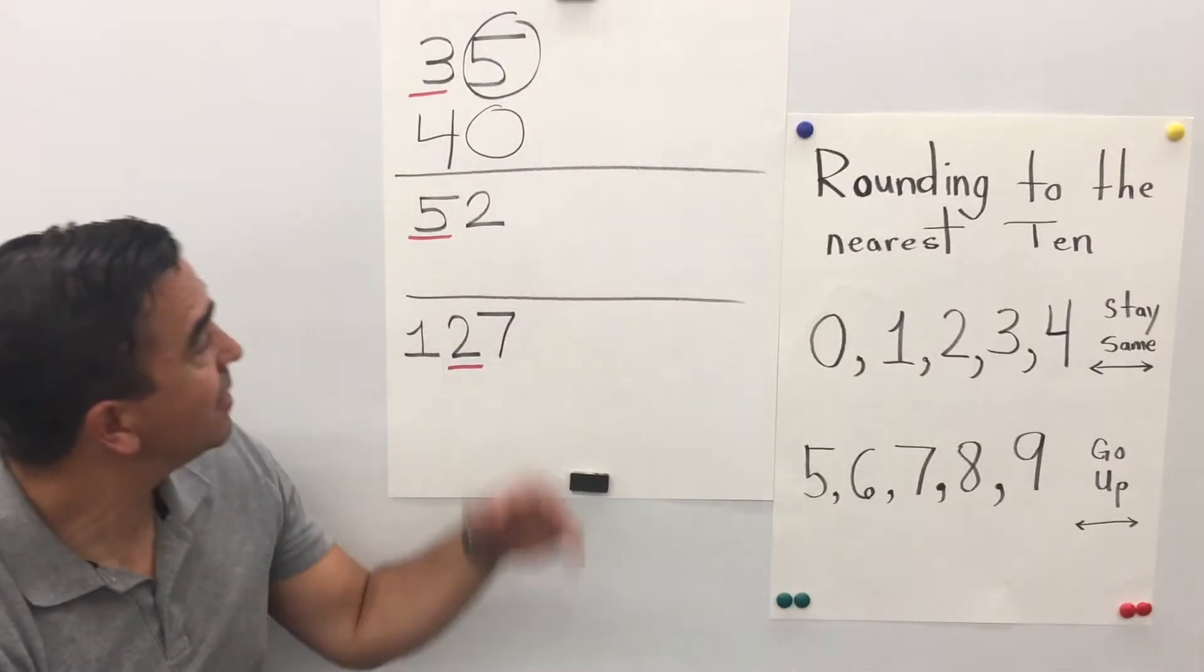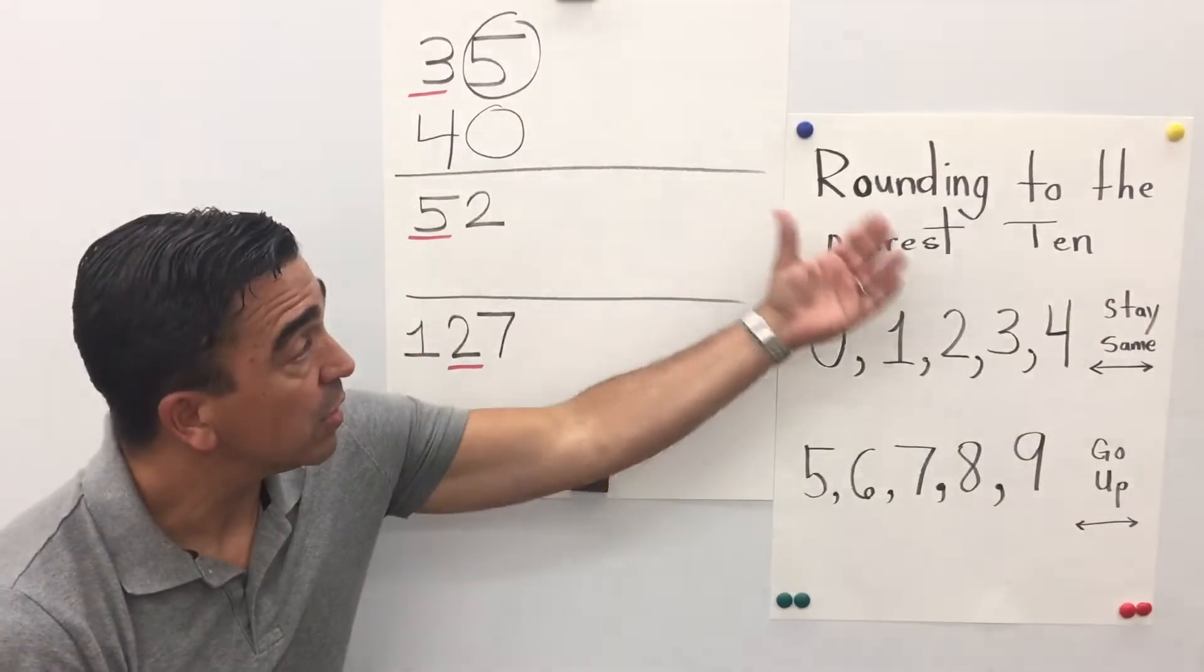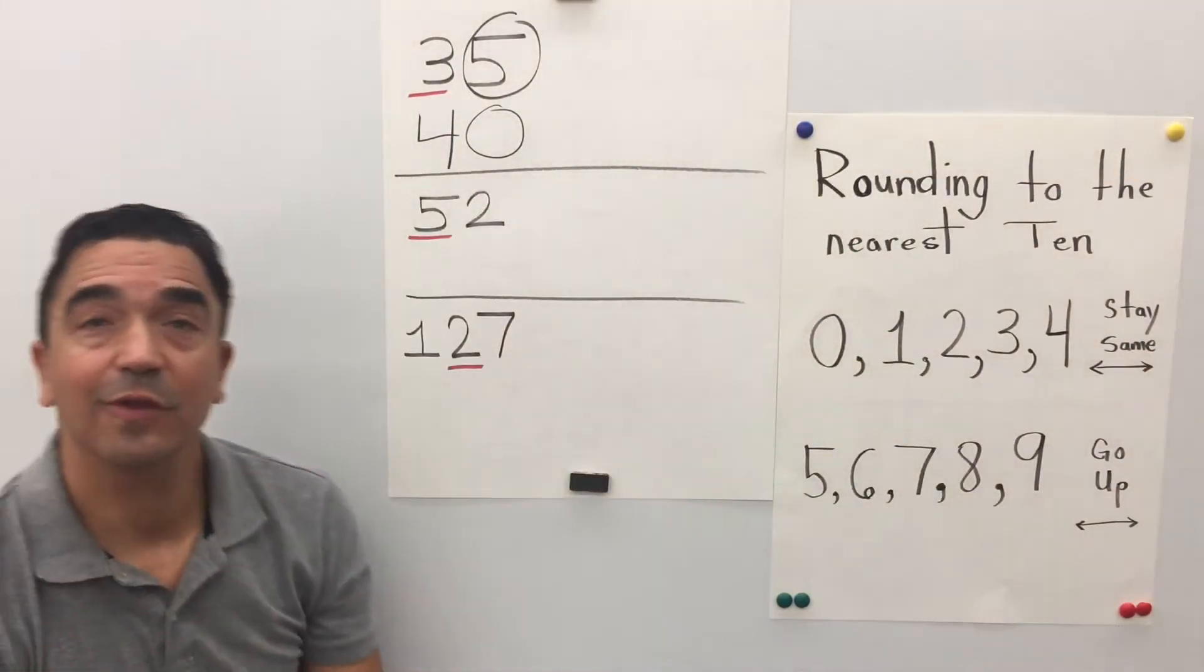Alright. So 35 rounded to the nearest ten, 40.